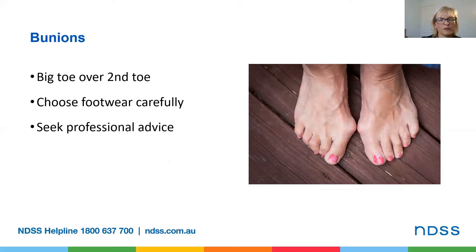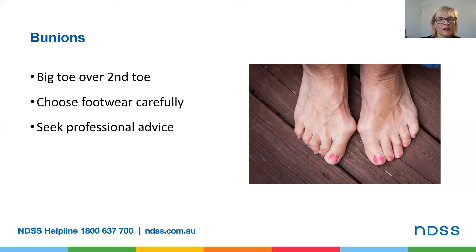This slide shows bunions, where your big toe angles in over your second toe due to the big toe joint being crooked. You will often see a big red and calloused area where the big toe joins the rest of the foot. Bunions are often caused by wearing shoes which are high and/or narrow around the toes. Try to wear shoes, runners or slippers that fit well, and avoid high-heeled, pointed or tight shoes. Shoes with laces or straps are best as they can be adjusted to the width of your foot. Sometimes padding can be used over the bunion to help with comfort.